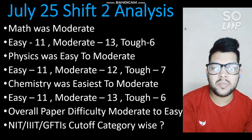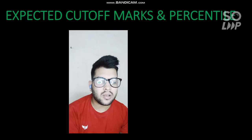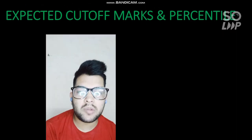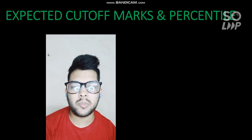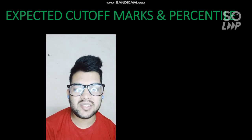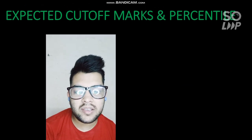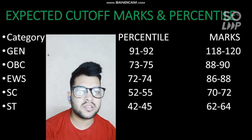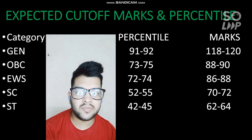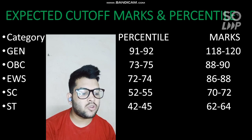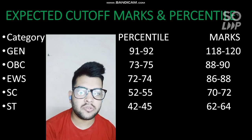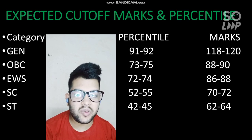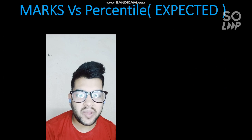The percentile cutoff will remain the same across all shifts and phases, but the marks required depend on the difficulty level. Since this paper was slightly easier, you need to score slightly higher marks to clear the JEE Advanced cutoff. For the General category, you need to score at least 118 to 120 marks to be eligible for JEE Advanced. You can check other categories by pausing the video.